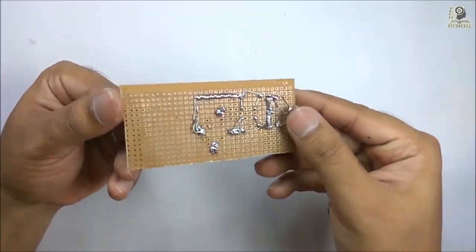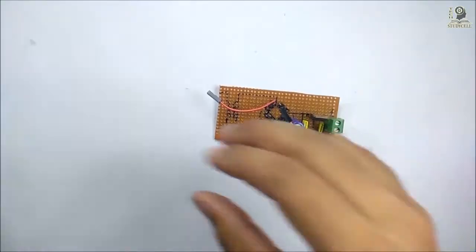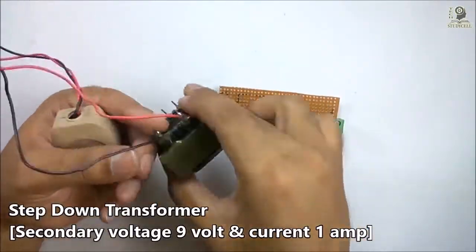Now soldering is complete. Now I will place the step-down transformer as per the circuit diagram.